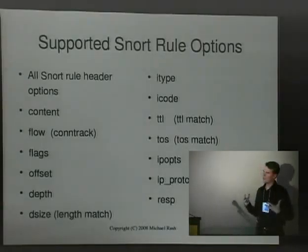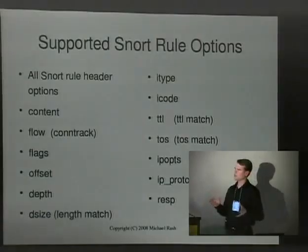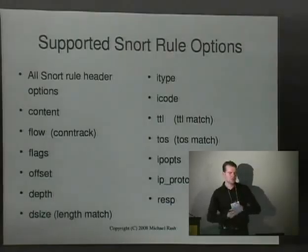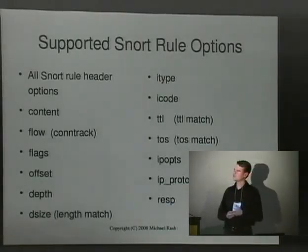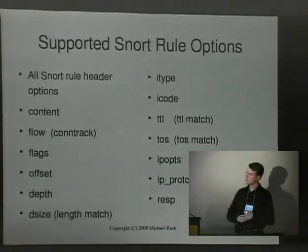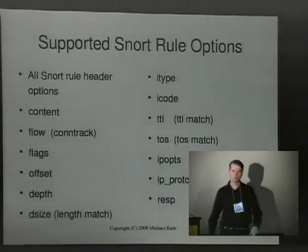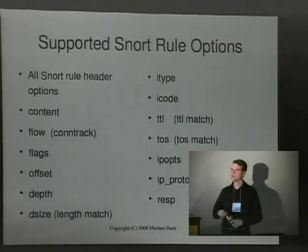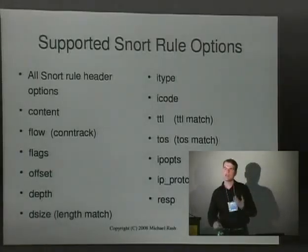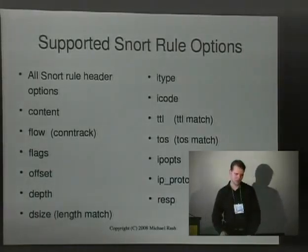Snort has a lot of keywords — how many can FWSnort actually support? Generally, anything that uses Snort rule header options can be expressed: ports, protocols, IP addresses, the content keyword, and the flow keyword. The remainder — including TTL match — are not all necessarily supported within a compiled kernel. The TTL value is included by default in IP tables log headers. Unsupported options include PCREs, which are becoming more and more important within Snort rule sets. They essentially give you a little dedicated decoder to express how an application will respond to an attack or what the attack itself might look like. It's very difficult to express that within an IP tables rule because we don't have a PCRE engine directly in the kernel.